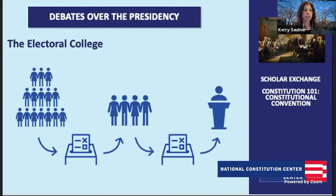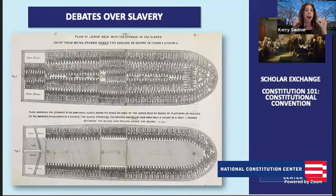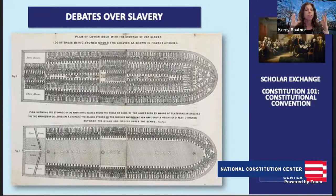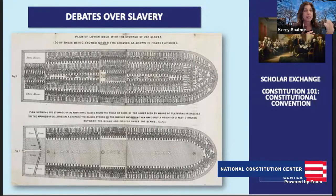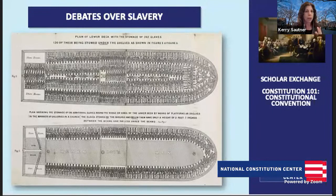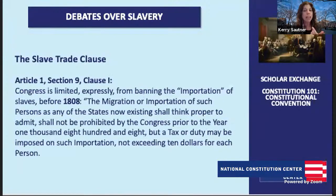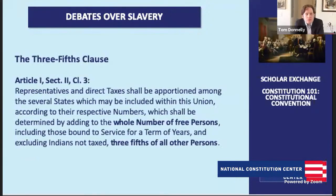Our final big debate is around enslavement in the Constitution and in America. There are 55 delegates to the convention over that summer, and 20 of them had directly or indirectly enslaved people in their lives or families. These are some of the most crushing and crucial debates at the convention — ones that almost tore it apart. The two areas: debates around the Three-Fifths Clause and representation, and debates around the end of the slave trade. Let's begin with the Three-Fifths Clause.